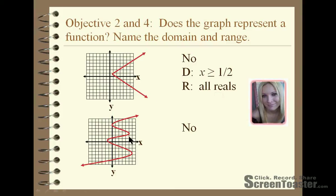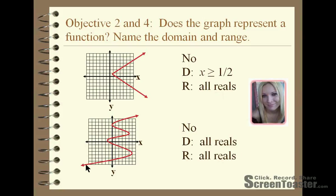This last one here would not be a function. For instance, this vertical line right here that I'm drawing would cross at 1, 2, 3, 4, 5 different points. The domain and the range would be all real numbers, because as you can see by the arrows, it goes to the left and to the right with no restrictions, so the domain is all real numbers. It also goes down and up with no restrictions, so the y values — the range — would be all real numbers.